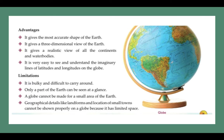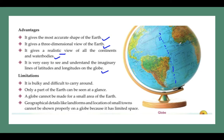The advantages of the globe: it gives the most accurate shape of the earth, it gives a three-dimensional view of the earth, it gives a realistic view of all the continents and water bodies, and it is very easy to see and understand the imaginary lines like latitudes and longitudes.